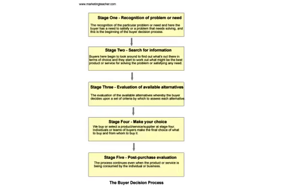Core to this process is the fact that the purchase is generally of value in monetary terms and that the consumer or the business will take time to actually assess alternatives. For FMCG, or fast moving consumer goods, the purchase decision process tends to be shorter or quicker, and for habitual purchase behavior or repeat purchases, the decision process is pretty much short-circuited.